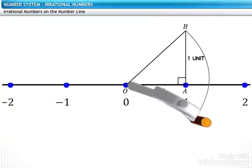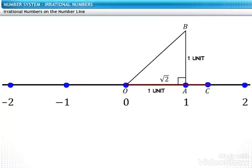Let's mark the point of intersection of the arc on the number line as C. The distance between O to C is the square root of 2. Hence point C represents the square root of 2 on the number line.